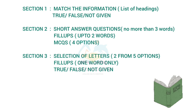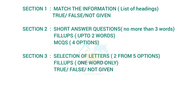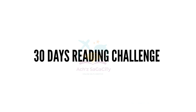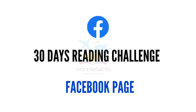Regarding the last section of general reading, you will get a long passage similar to the academic module. The question type will be selection of letters from five options — select any two — along with fill-up type note completion (one word only) and true/false/not given questions. Section 3 will be at moderate level. Overall, the general reading is easy to moderate, so try to practice with updated materials.